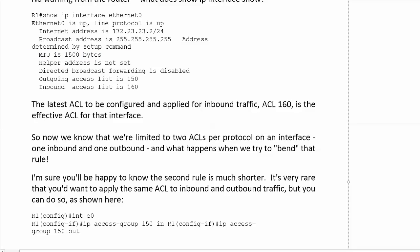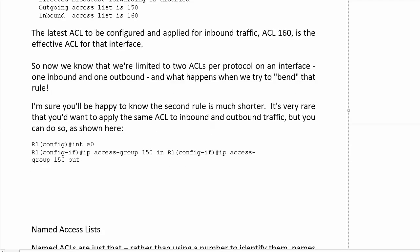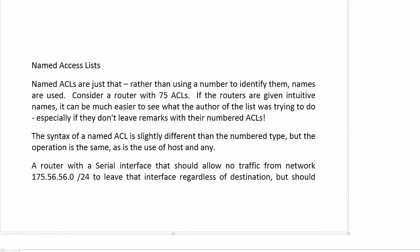Named ACLs are up next, and they're a godsend. With numbered ACLs we first thought 100 of each type was all we'd ever need, then extended ranges came along. Now we have the option to create a named ACL. I like these for two reasons: first, we avoid any numeric limitations; and second, you can give an ACL a more intuitive name — like 'block-network-56' or 'allow-telnet.' In enterprise networks with change control procedures, the name of the ACL may even be specified.